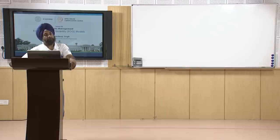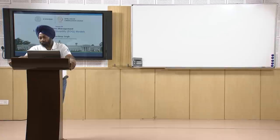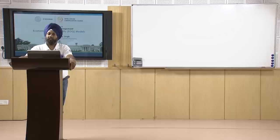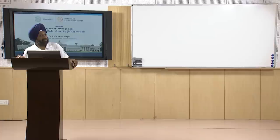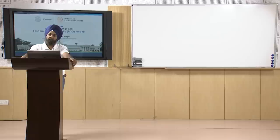Since demand is constant, the model is not valid for variable demand or variable material consumption. Second assumption: no shortages are allowed — it must never happen that there is a shortage and the process stops. Third: lead time for receipt of orders is constant. For example, if the lead time is seven days and I order on September 21st, I am bound to receive the order after exactly seven days. The lead time between placing the order and receiving it is fixed.